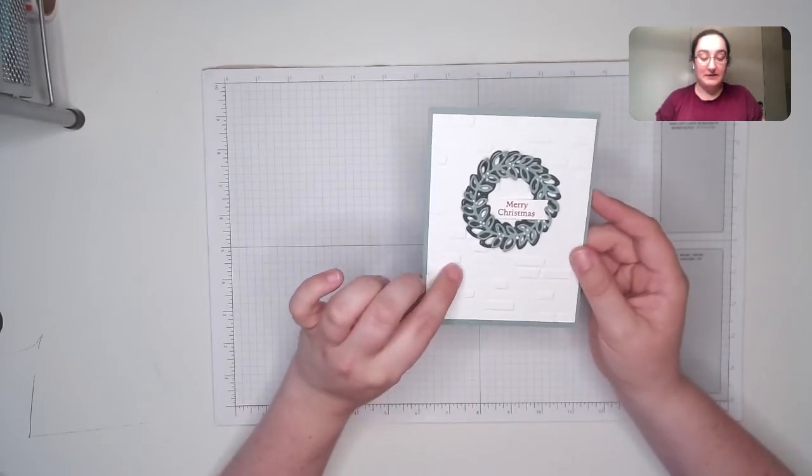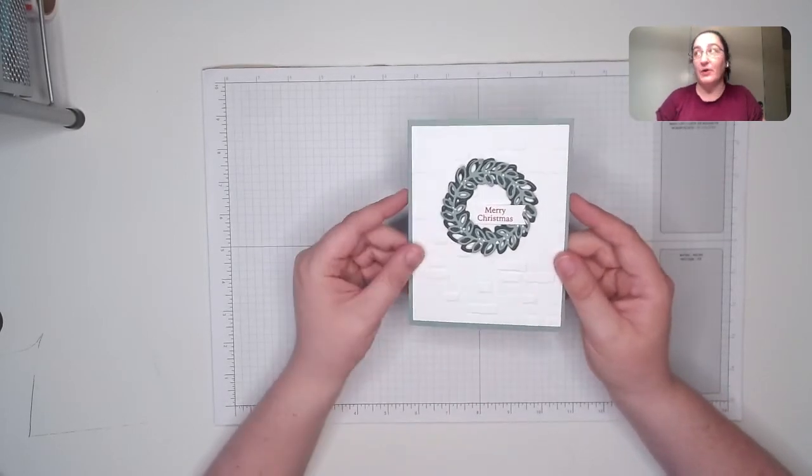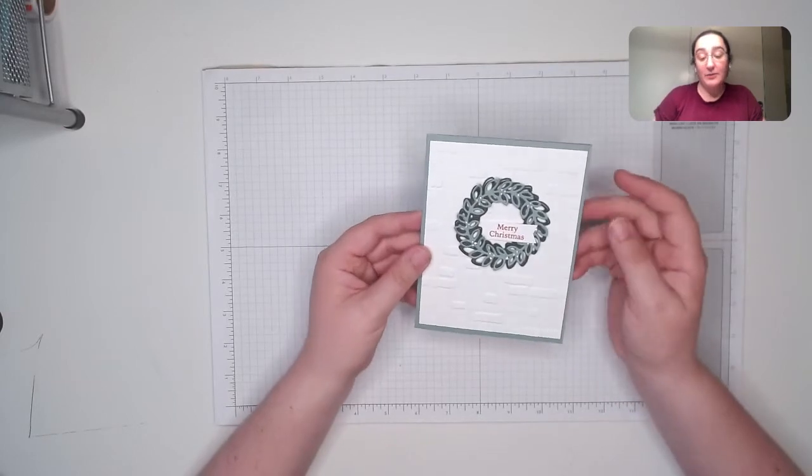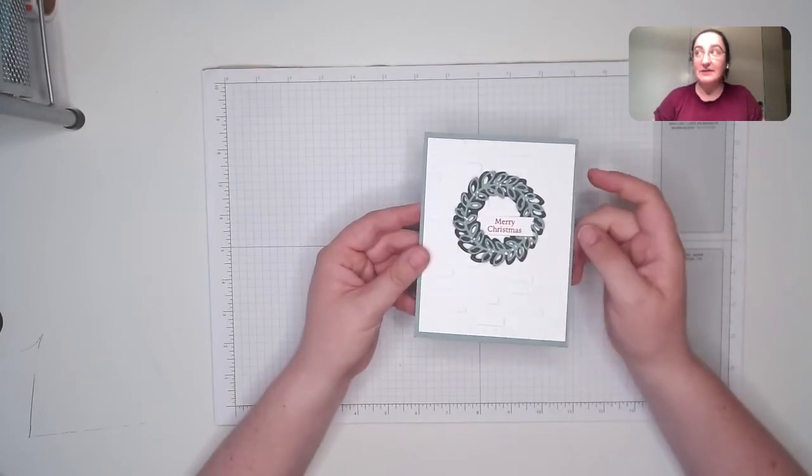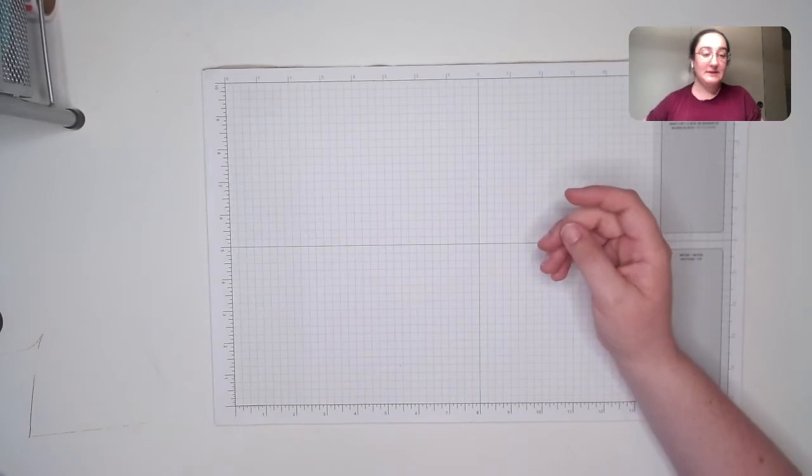And then I did another one with those die cuts and here I've just layered the die cuts in Soft Succulent and Evening Evergreen and then used the white to add some little mistletoe berries on there. And then the background is embossed with brick and mortar, which I think is appropriate to hang a wreath from. And then just a simple little banner for the sentiment.